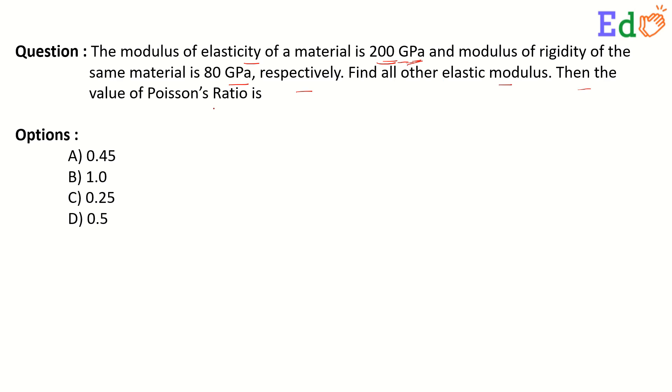Then the value of Poisson's ratio is - the options are given A 0.45, B 1, C 0.25, D 0.5.